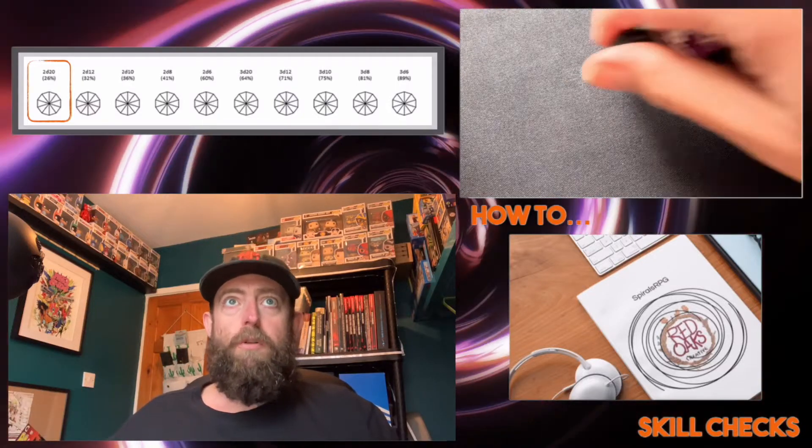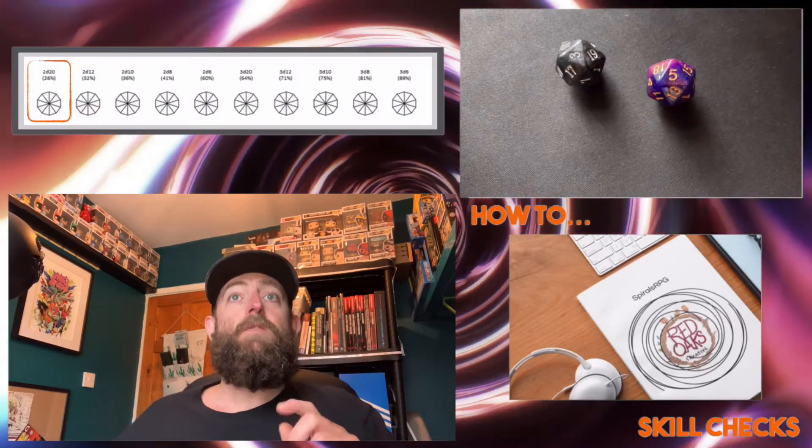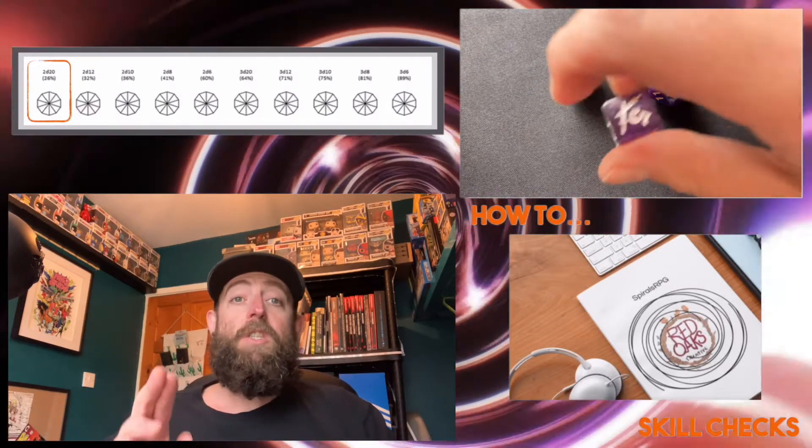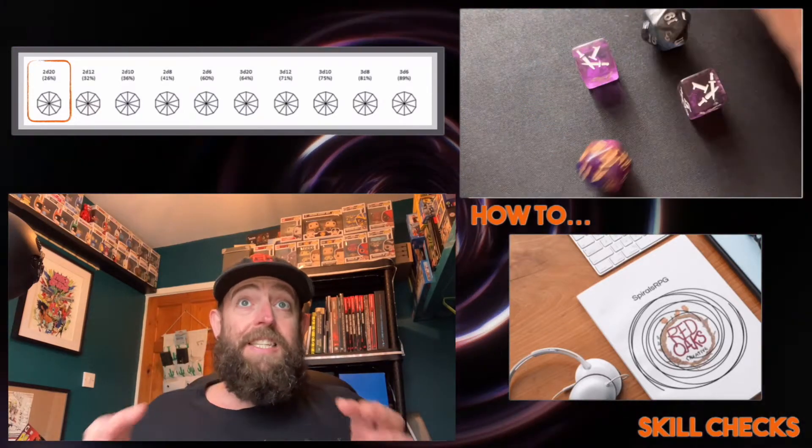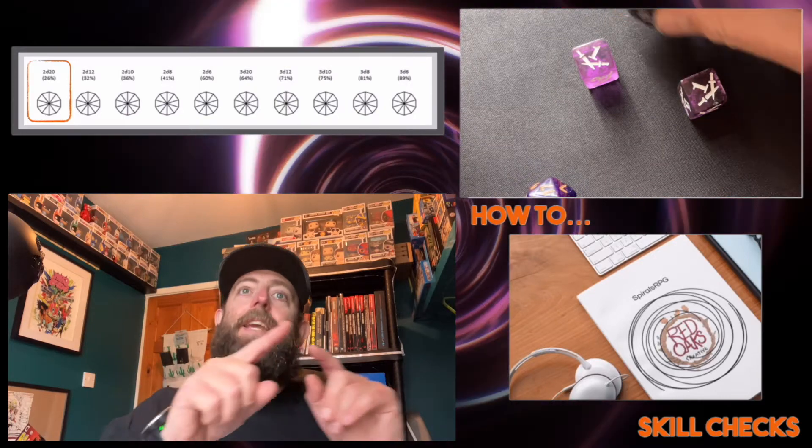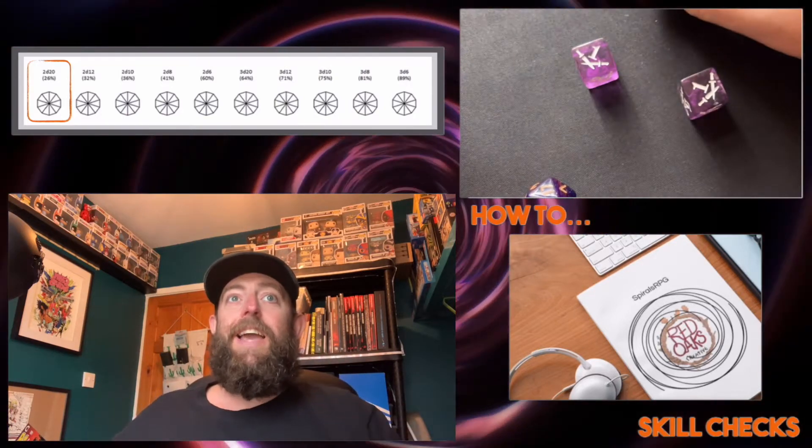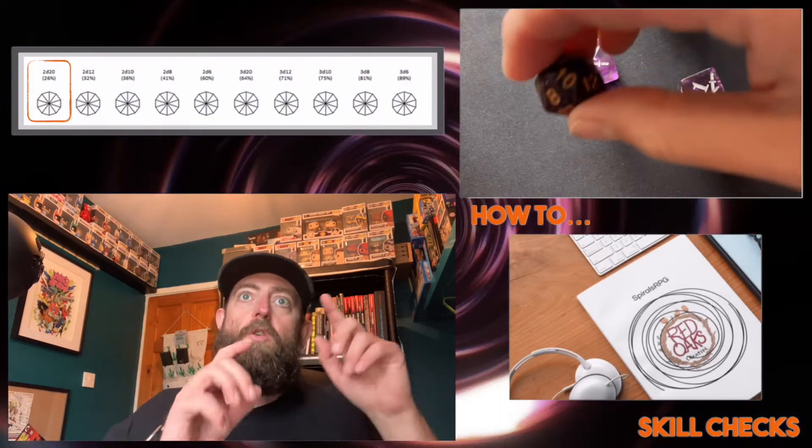A character with no completed skill wheels is given a dice pool of 2d20. This is matched with two key dice. Key dice are always d6. This gives us a dice pool of 2d20 and 2d6. The aim is to get combinations of dice that total 7.